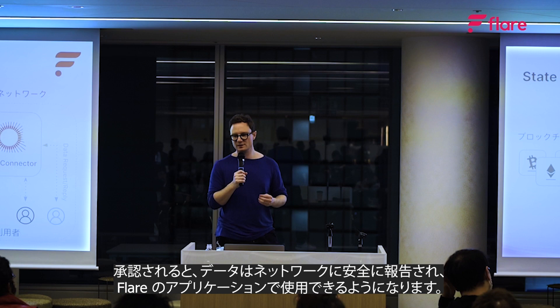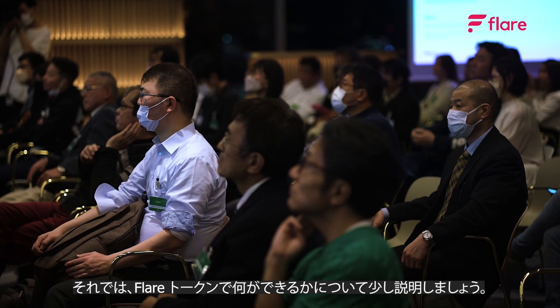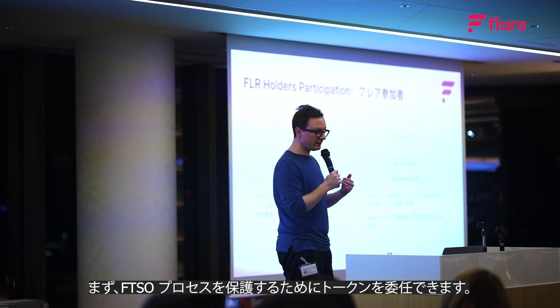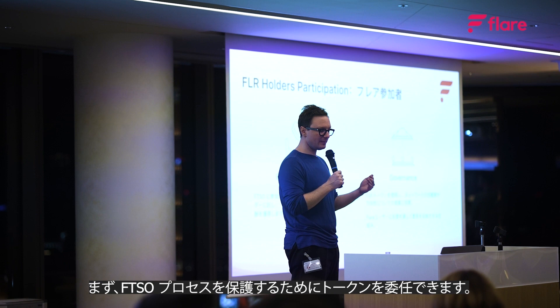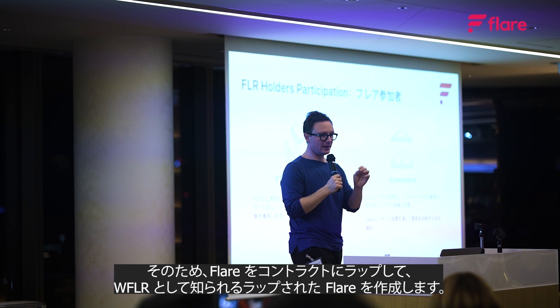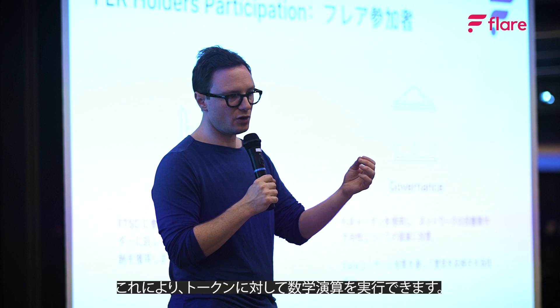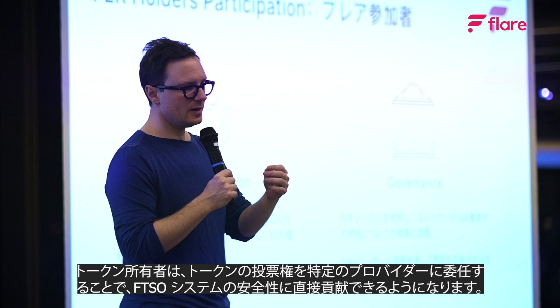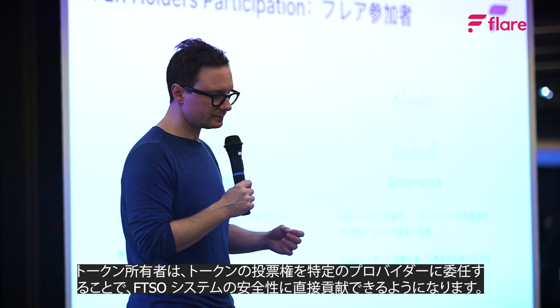Let's discuss what you can do with the Flare token. There are currently three ways the Flare community can participate in the network with their tokens. First, they can delegate their token to secure the FTSO process — they wrap their Flare in the contract to create what's known as WFlare, Wrapped Flare. This enables token holders to directly contribute to the safety of the FTSO system by delegating their token's vote power to a particular provider.